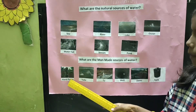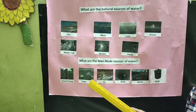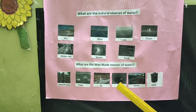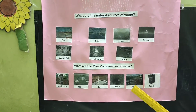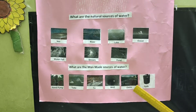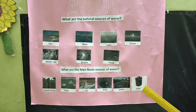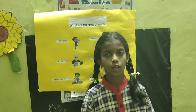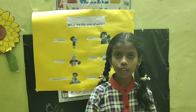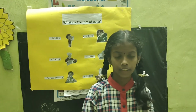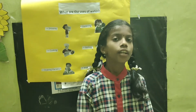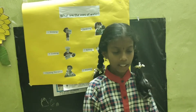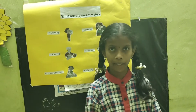The manmade sources of water are: Hand pump, Tube, Tap, Well, Dam, and Tank. Now I am going to do an activity for English MTP.